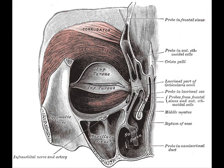The orbital portion is thicker and of a reddish color. Its fibers form a complete ellipse without interruption at the lateral palpebral commissure. The upper fibers of this portion blend with the frontalis and corrugator.